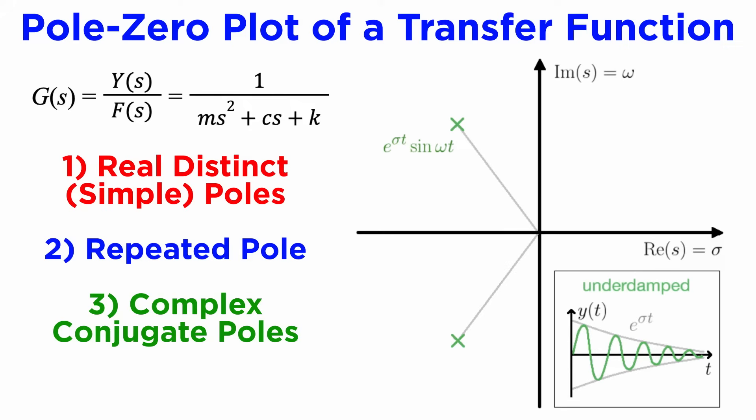If the poles are complex, we get an underdamped system which contains both oscillation and exponential growth or decay, where the real part sigma is the exponential rate parameter while the imaginary part omega is the sinusoidal frequency, again stable for sigma less than zero.